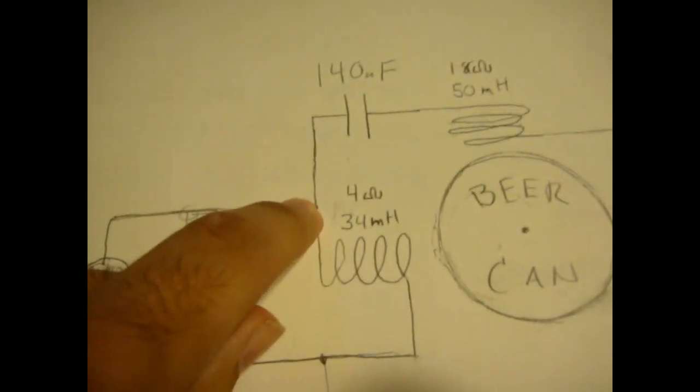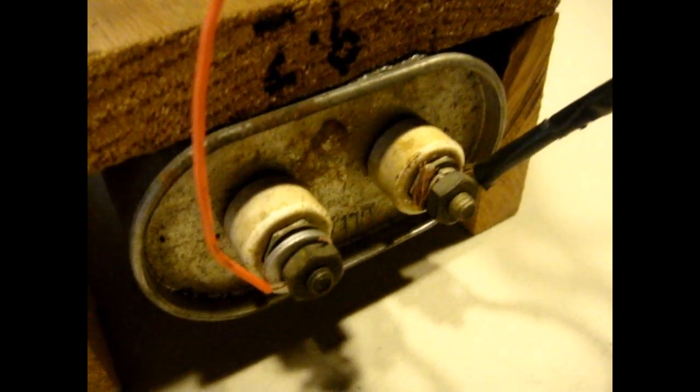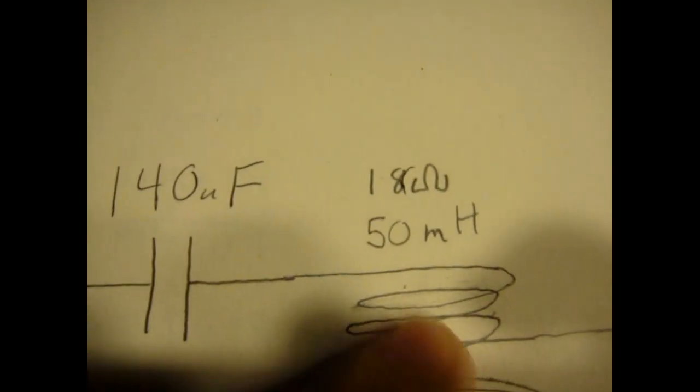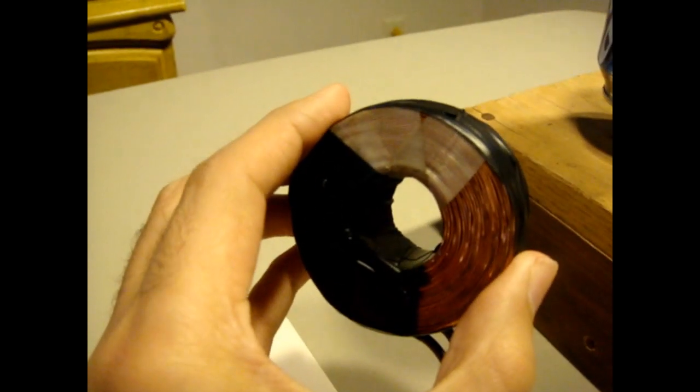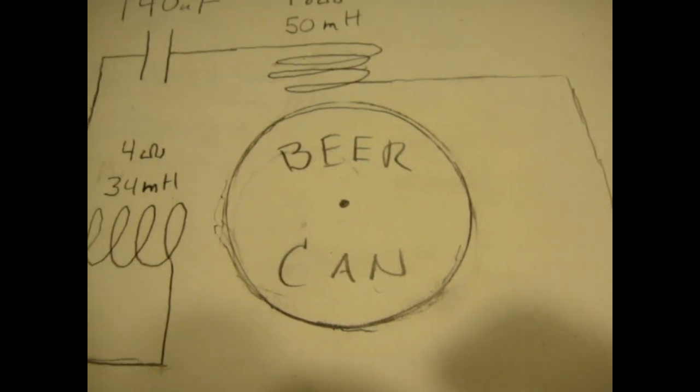From that node we've attached a 140 microfarad capacitor which is this guy here. And he is in series with this 50 millihenry 18 ohm coil here. And our beer can is the rotor of our AC motor.